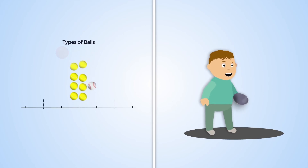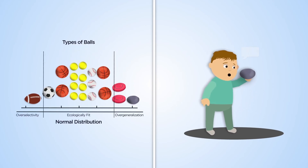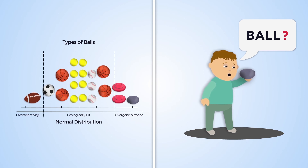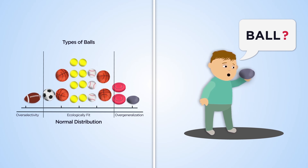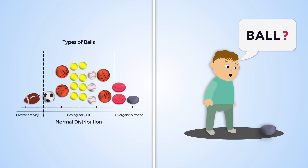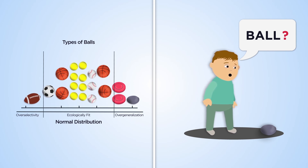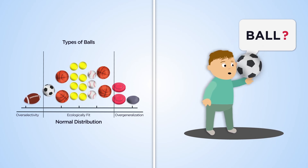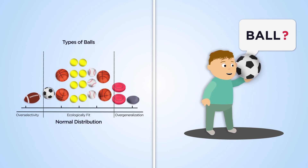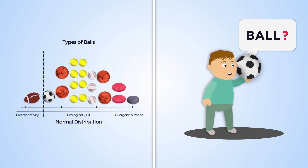But if stimulus control extends beyond the fitness threshold through overgeneralisation — a type 1 error — you may say 'ball' in the presence of rocks, frisbees or other items that won't access reinforcement. Similarly, extending beyond the fitness threshold through over-selectivity — a type 2 error — may preclude responding 'ball' in the presence of qualifying stimuli that have not been explicitly taught.